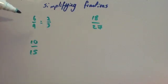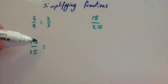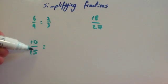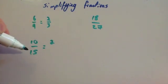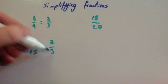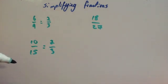Let's cancel down or simplify ten fifteenths. These are both divisible by five. You know they're both divisible by five because one ends in a zero, one ends in a five. So five goes into ten twice and five goes into fifteen three times, so ten fifteenths is also two thirds.